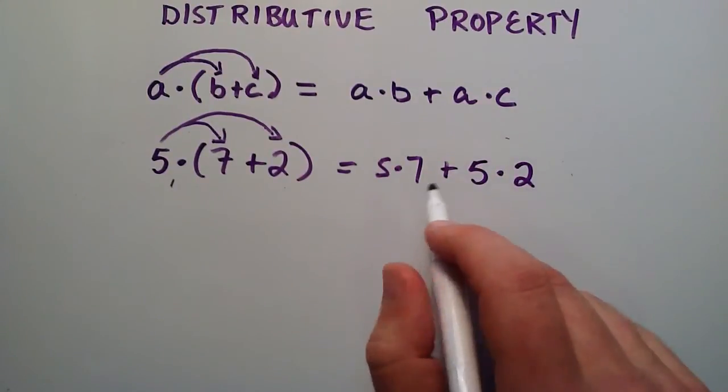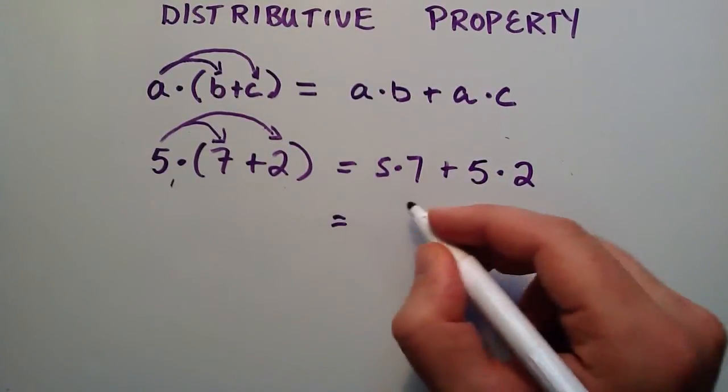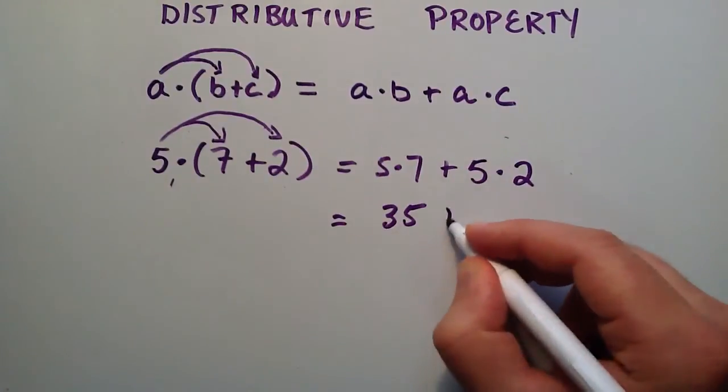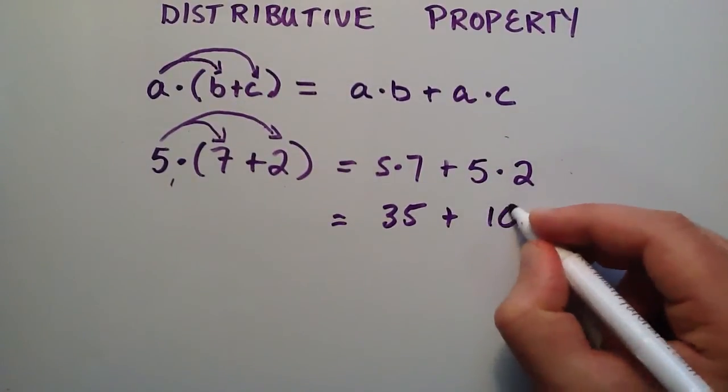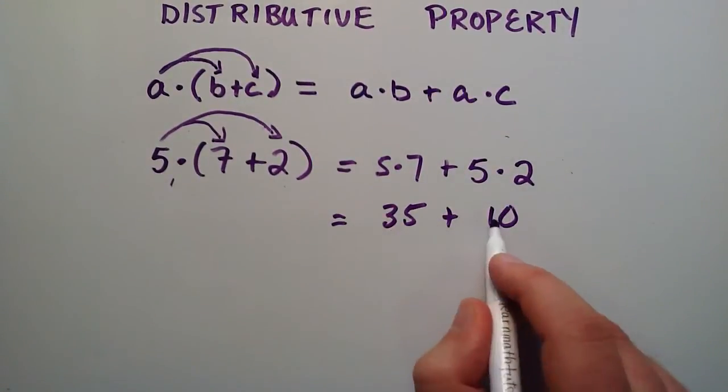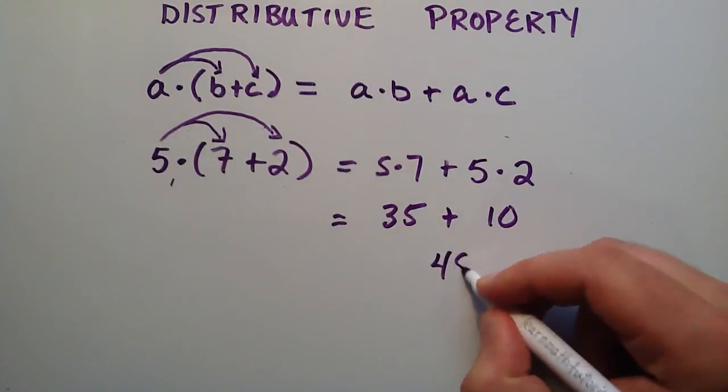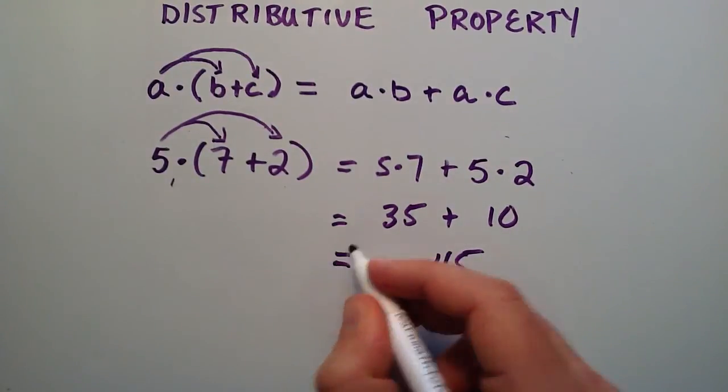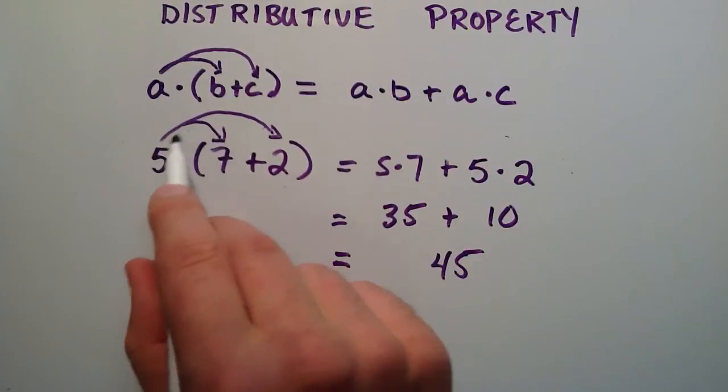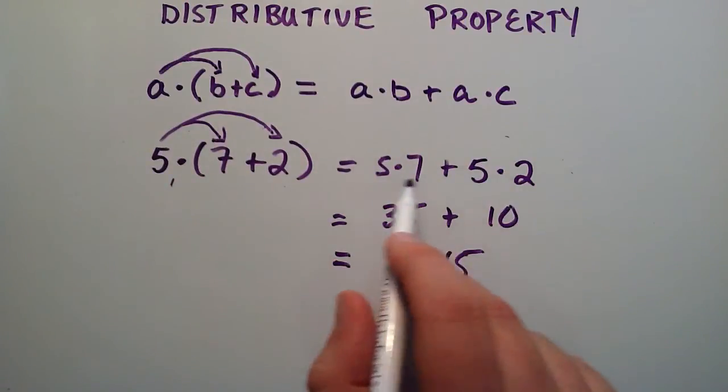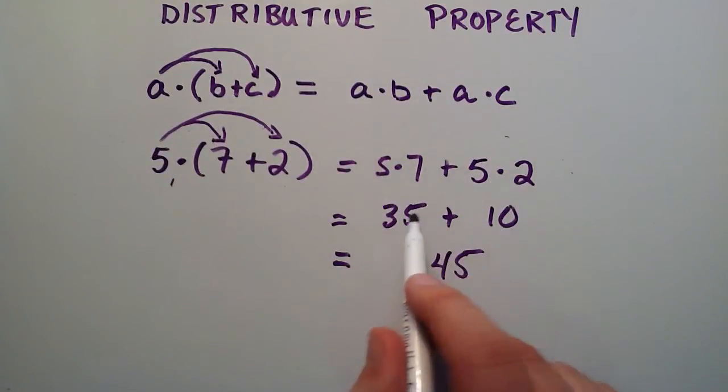And then we can just evaluate this. 5 times 7 is equal to 35. 5 times 2 is equal to 10. And then we have 35 plus 10 equals 45. So we distributed the 5 into the parentheses, and then carried out the multiplication first, and then added the results together to get the result 45.